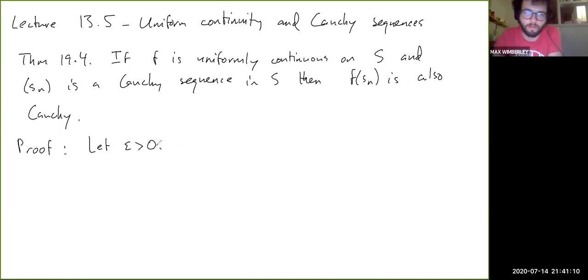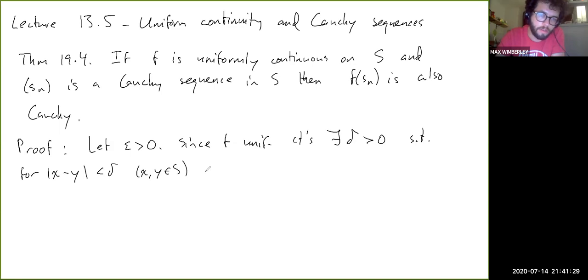So first, we invoke the uniformly continuous property. So since F is uniformly continuous, there exists a delta greater than zero, such that for X minus Y less than delta with X, Y in S, we have F of X minus F of Y less than epsilon, right? Okay, so now we know the target of like how close SN and SM have to be to each other, right? To make F of SN and F of SM be closer than epsilon.